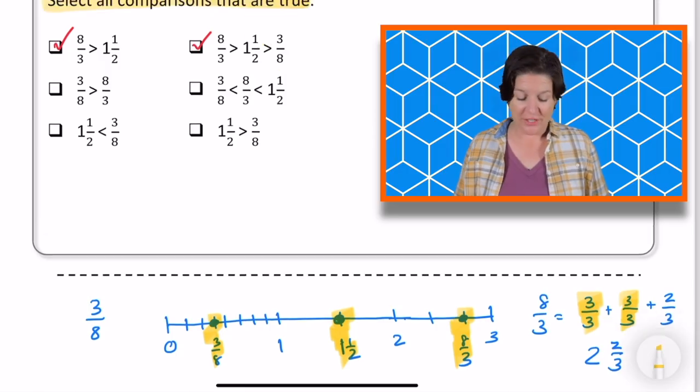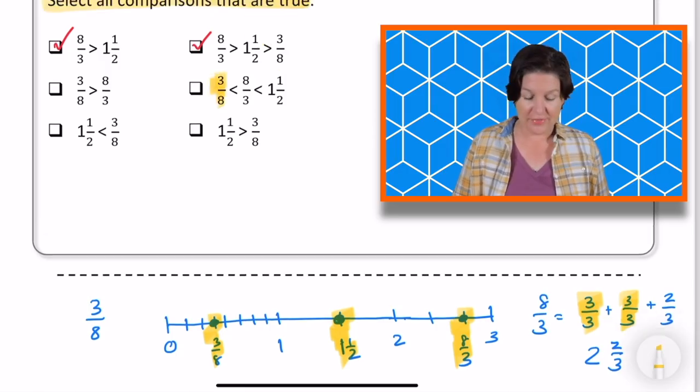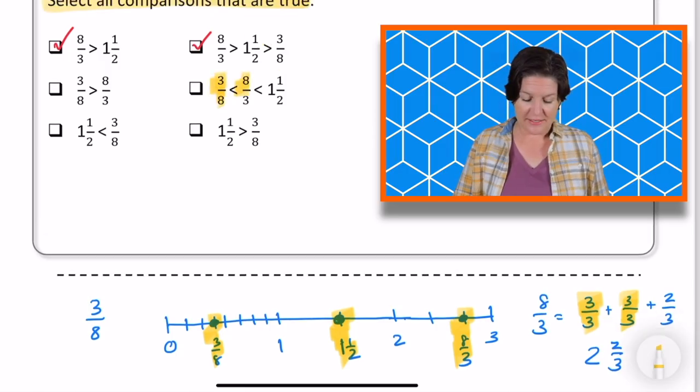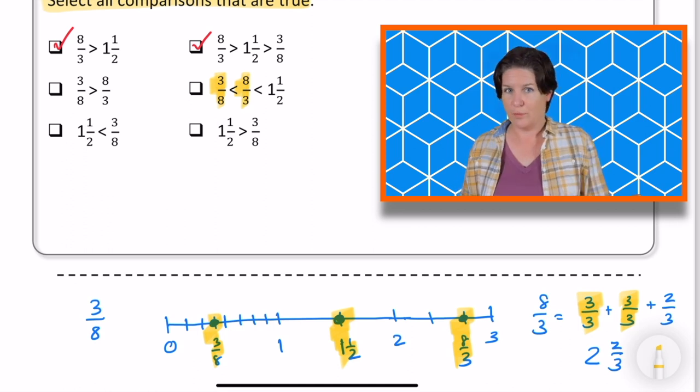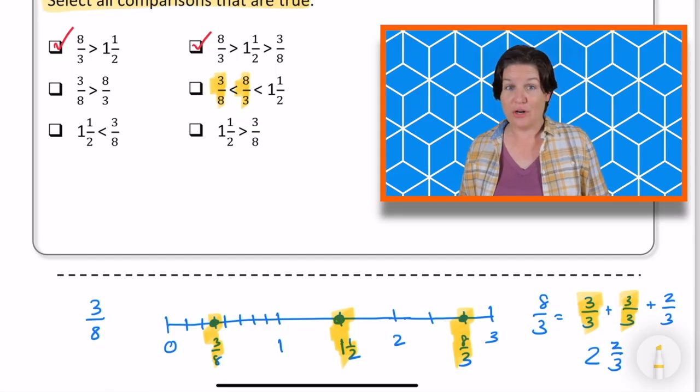Alright, and then we're looking at 1 1⁄2. Is that greater than 3 8ths? Yes, so we can go ahead and keep this one. This is a great answer choice. There we go. Alright, let's take a look at the next one. It says 3 8ths is less than 8 3rds. What do you think? Is that true? That is true. So far, we're looking good.